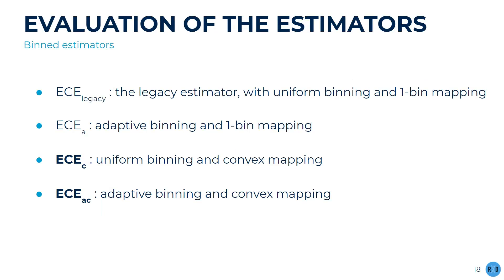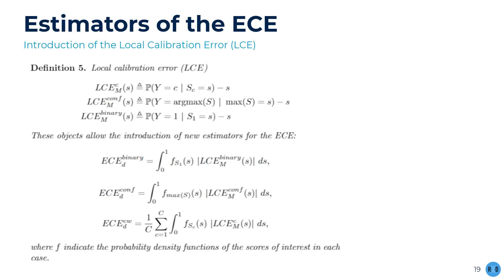This leads to different estimators. The legacy one uses classical uniform binning and one-bin affectation. The adaptive version uses adaptive binning and classical one-bin affectation. The convex estimator uses classical uniform binning but convex affectation. And the last one uses both theoretical improvements. Linear binning being a trivial way of performing density estimation in the histogram context, we push the idea further to remove completely the discrete grouping step in the estimation of the ECE.